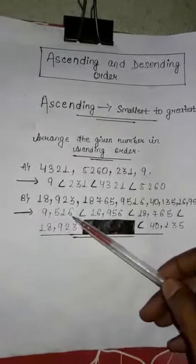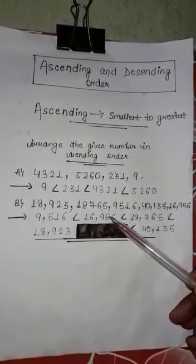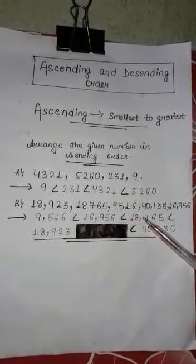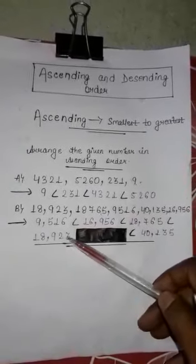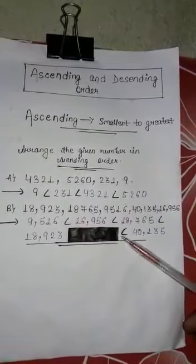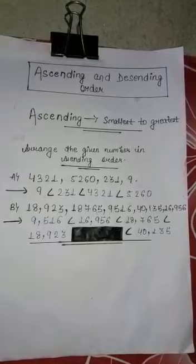9,516 is less than 9,560, is less than 16,956, is less than 18,765, is less than 18,923, and is less than 40,135.